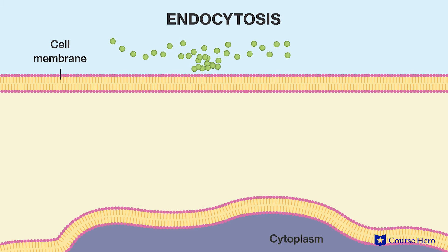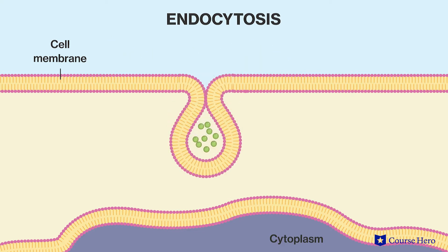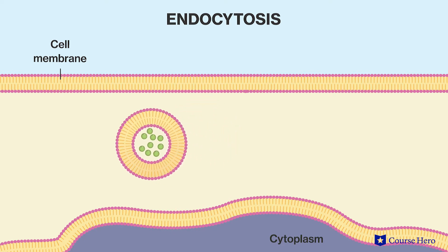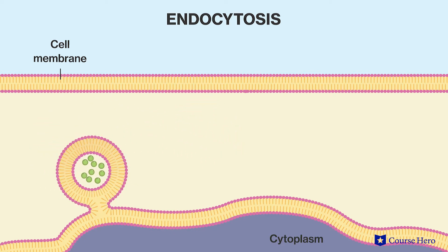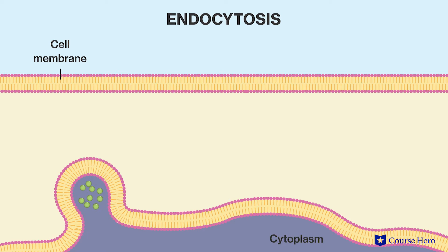The substance needing entry clusters at a location of the cell membrane, often due to the presence of specific receptors. The cell membrane then forms a pocket around the substances. This pocket, or invagination, pinches off from the internal surface of the cell membrane, forming a vesicle. The vesicle travels inside the cell and fuses with a membrane-bound structure, such as a lysosome, opening the pocket and releasing the material.